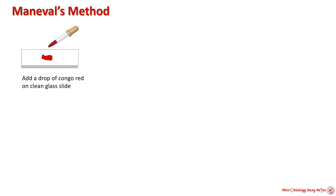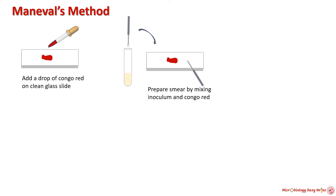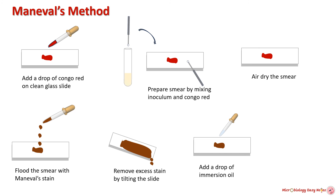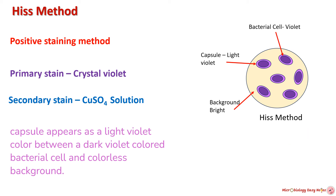Procedure of Maneval's method: take a clean, sterilized grease-free slide and add a drop of 1 percent congo red to the center. Prepare a smear by taking an inoculum from the bacterial culture and mix it with the drop of congo red. Allow the smear to air dry. Flood the smear with Maneval's stain and leave it for at least one minute. Remove excess stain by tilting the glass slide, add immersion oil to the stained area, and observe under the microscope.